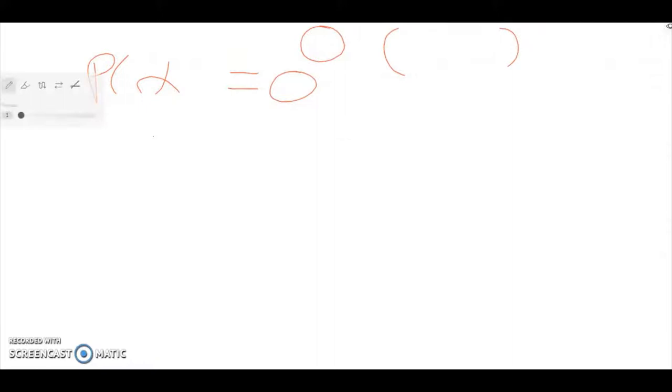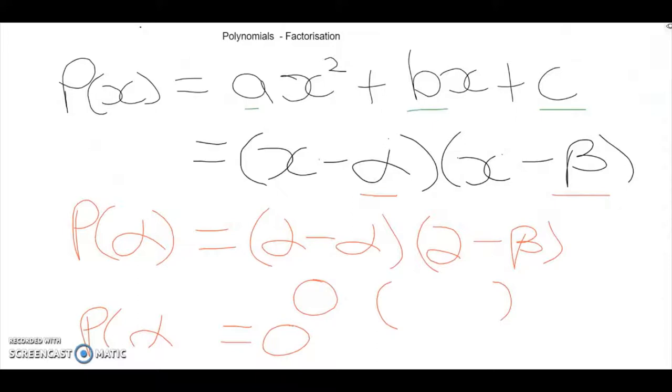A good example of this is the number 30. That is the same thing as saying 5 times 6, where 5 and 6 are factors of 30. Here we are just saying that (x - α) and (x - β) are the factors of this polynomial.